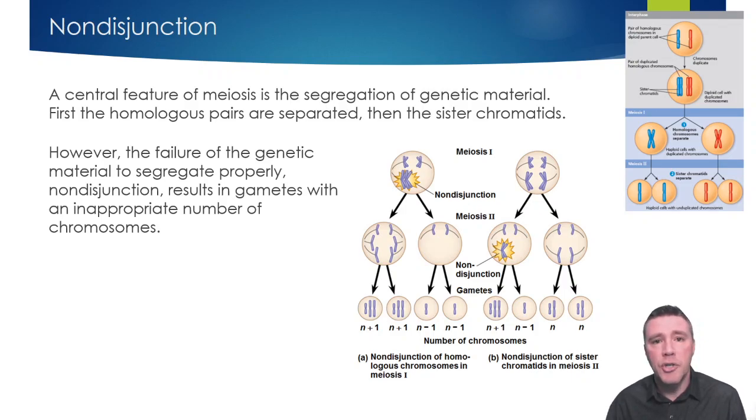Alternatively, if nondisjunction occurs in meiosis 2, half of the gametes will be okay, but the other half will be incorrect.